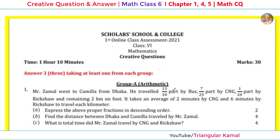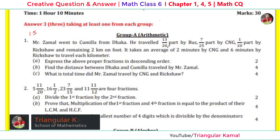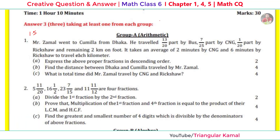Let's review the first question, which is from exercise 1.1.5, based on section 1.5. Mr. Jamal went to Kumila from Dhaka. He traveled 13/20 parts by bus, 7/25 parts by CNG, 1/20 part by rickshaw, and the remaining two kilometers on foot. It takes an average of two minutes per kilometer by CNG and six minutes per kilometer by rickshaw.